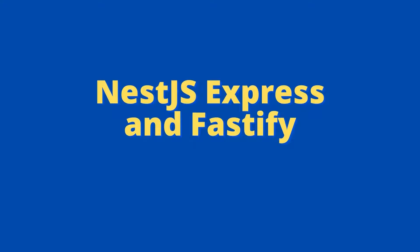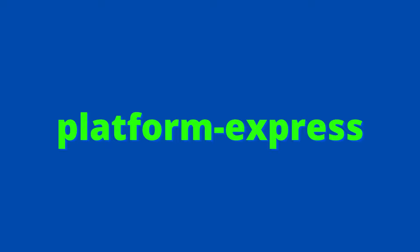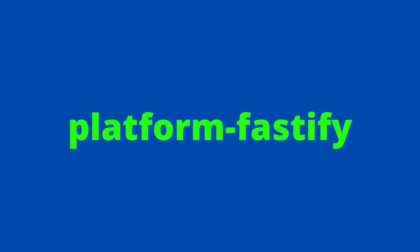Having understood the bootstrapping process, we can now focus on the original question: how to configure our NestJS application to use Express or Fastify. Technically, NestJS is a platform-agnostic framework — it can work with any Node-based HTTP framework after creating an adapter for it. The primary function of such an adapter is to proxy middleware and request handlers to the chosen platform. Out of the box, NestJS supports two platforms. Platform Express uses the Express framework and is the default — we don't have to make any changes to the starter project if we intend to go with Express. Platform Fastify is the second option and uses Fastify as the underlying HTTP framework. To use Fastify, we have to explicitly specify it in the main.ts file.